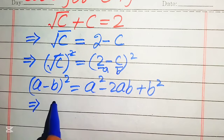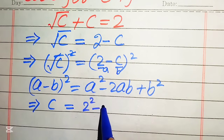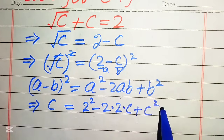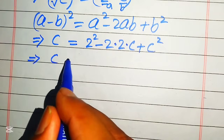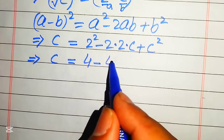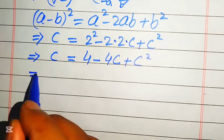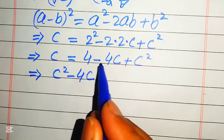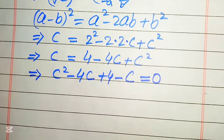On the left hand side the square and the square root cancel, and we get c. On the right hand side we apply the formula, so it becomes 2 squared minus 2 times a times b — where a is 2 and b is c — plus b squared, which is c squared. This simplifies to c equals 4 minus 4c plus c squared. Now we move the c to the right hand side, giving us c squared minus 4c plus 4 minus c equals 0.